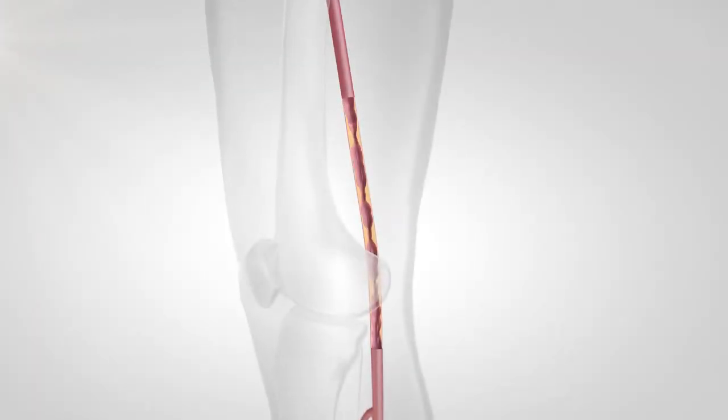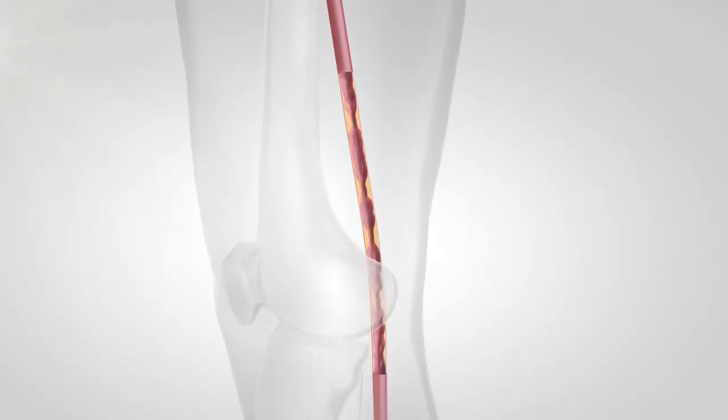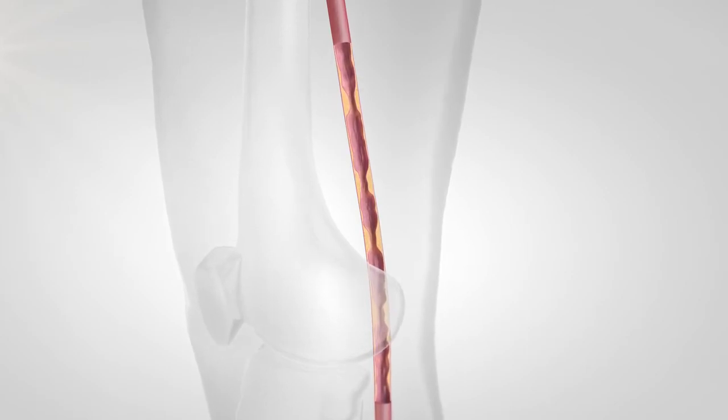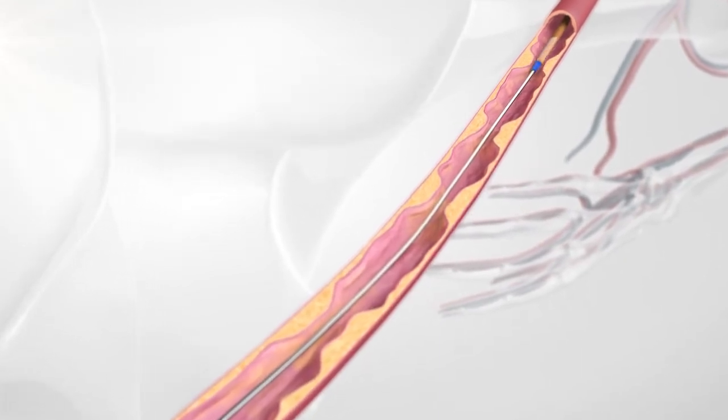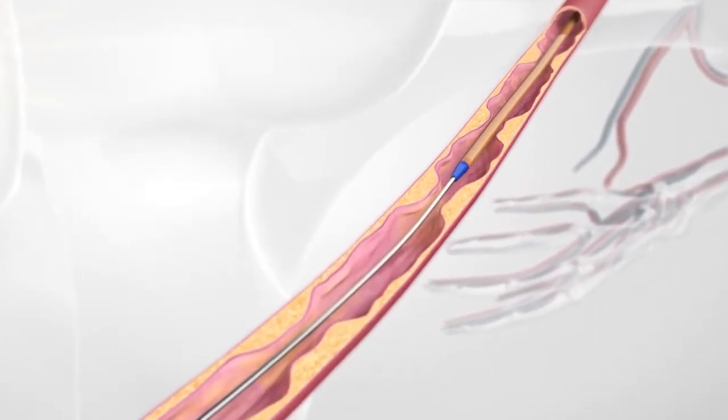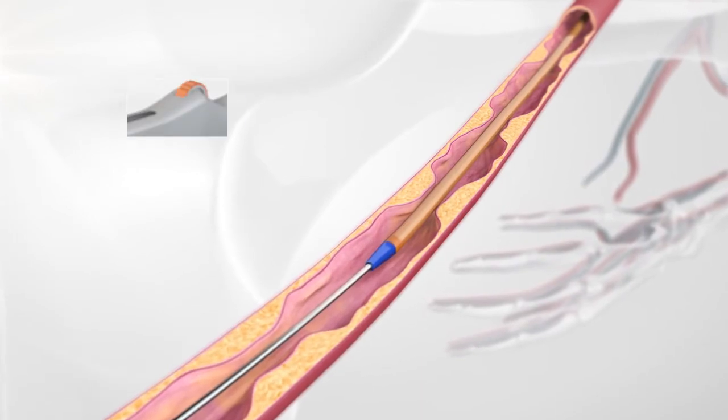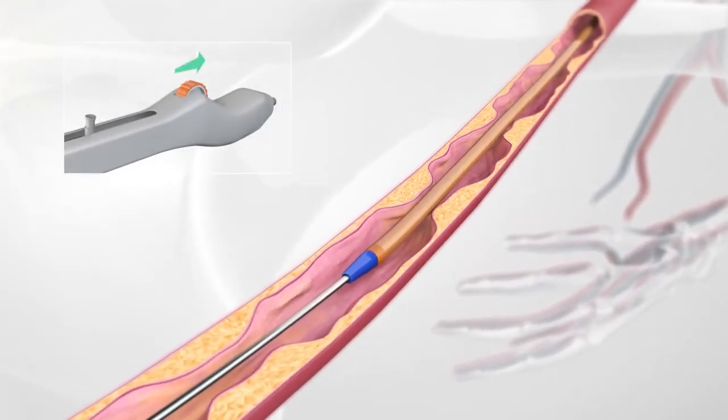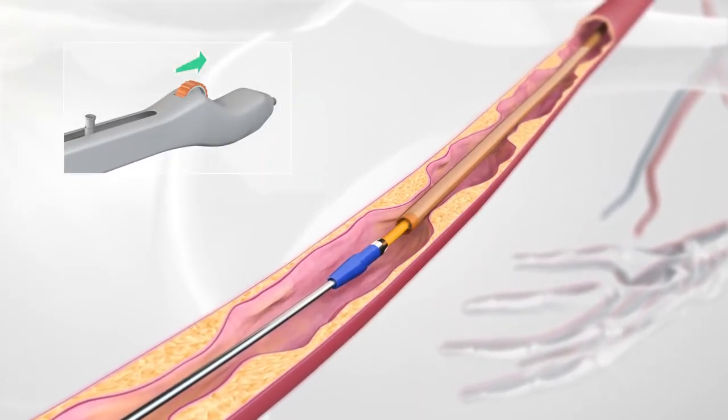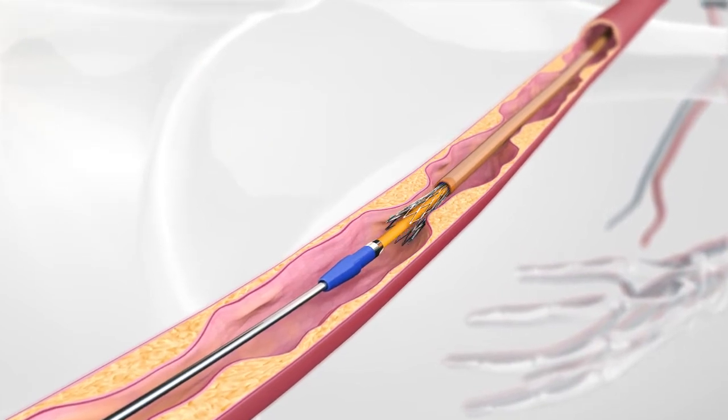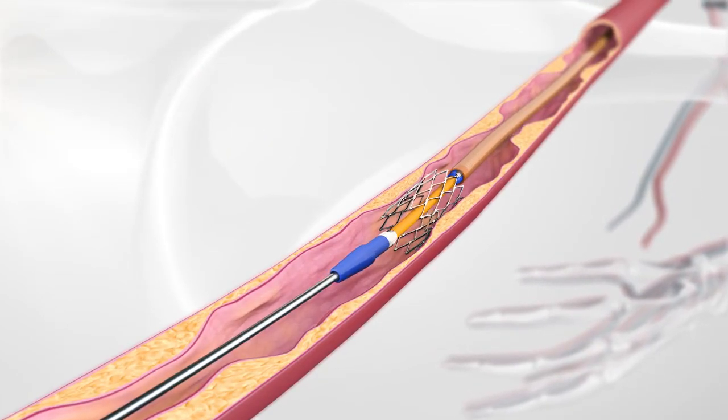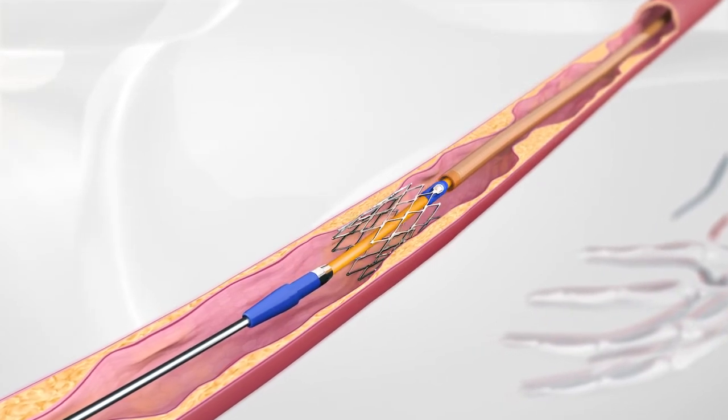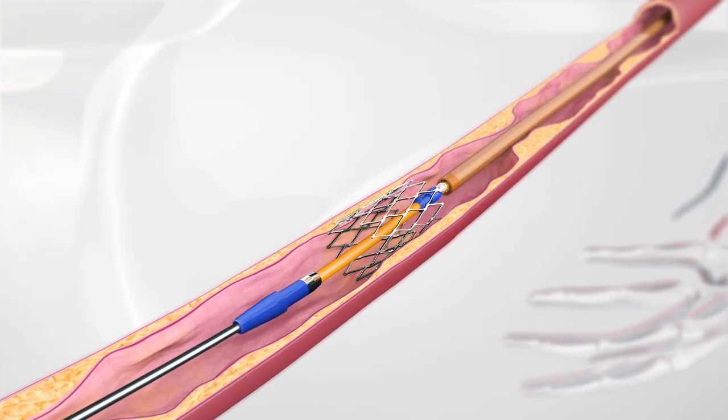In this example, four highly calcified lesions are in a 13cm long segment. After predilatation with a balloon catheter, the first short stent can be implanted. By turning the wheel on the handle, the stent is released into the lesion of the vessel. The stent is completely released once the marker band is unlocked from the mount point.